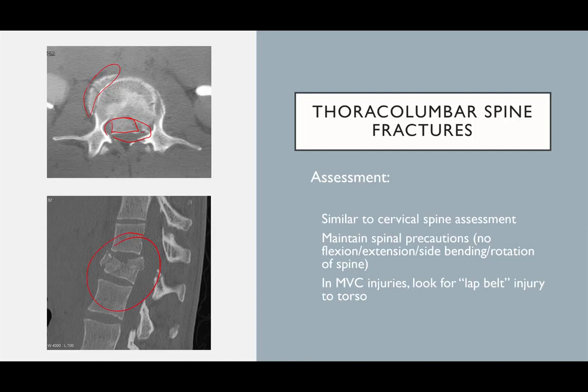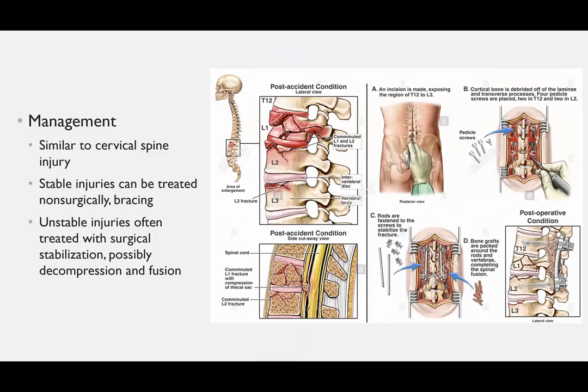Thoracolumbar spine fractures can be assessed similarly to cervical spine — maintain spinal precautions. In motor vehicle injuries, you also look for so-called lap belt injuries to the torso. Management is similar to cervical spine injury: stable injuries are treated non-surgically and braced, whereas unstable injuries can be treated with surgical stabilization — maybe decompression and fusion.